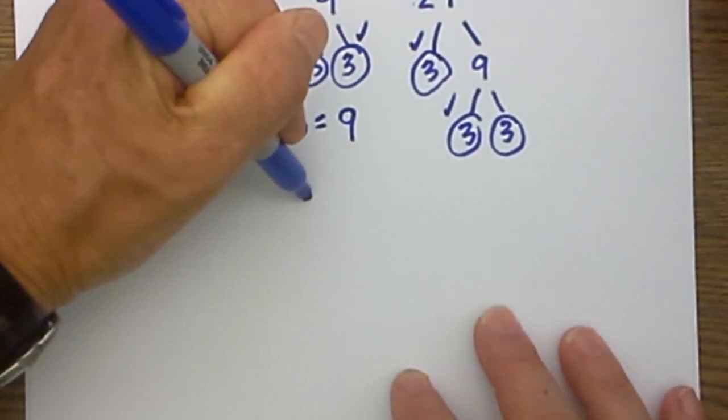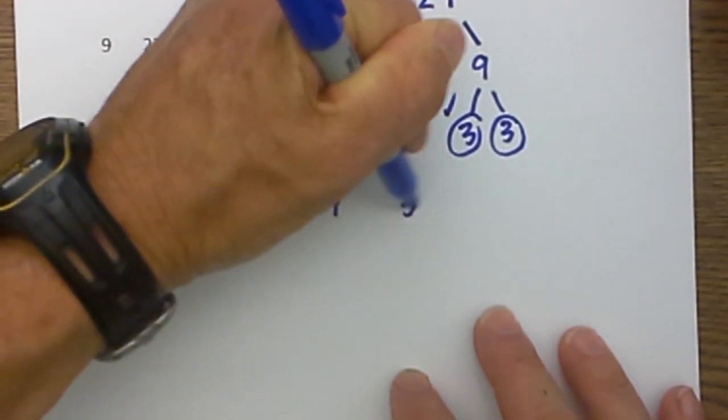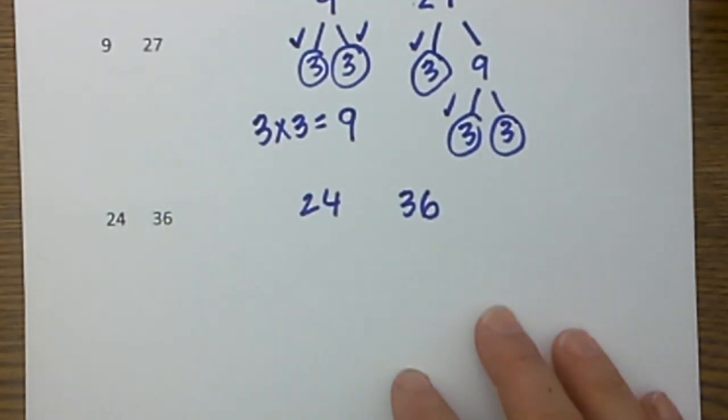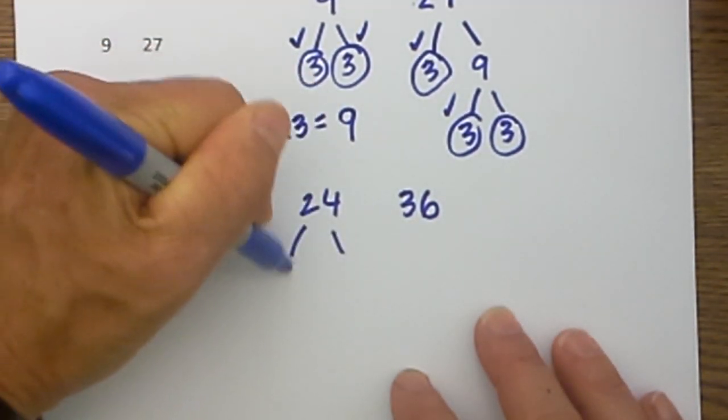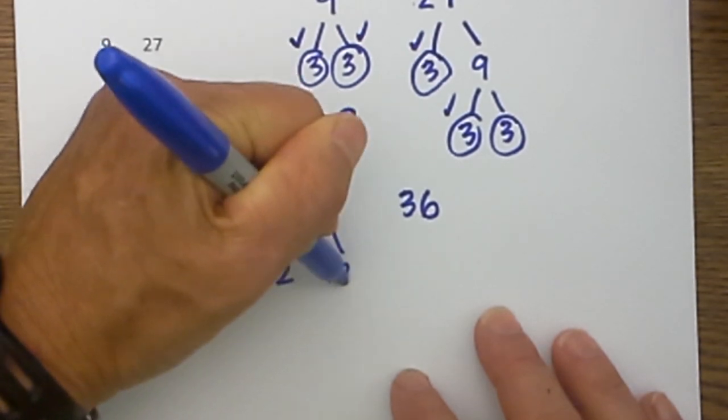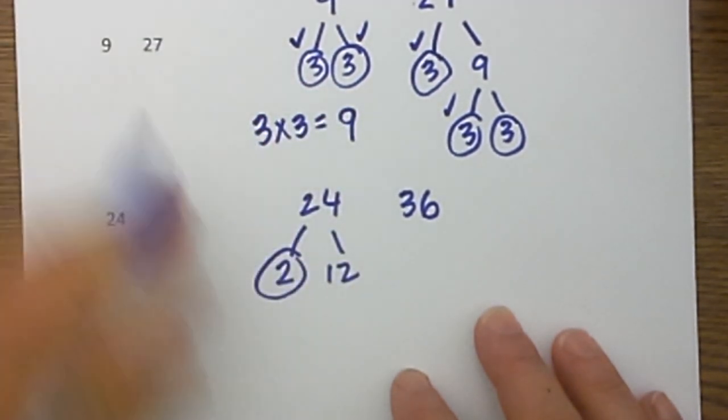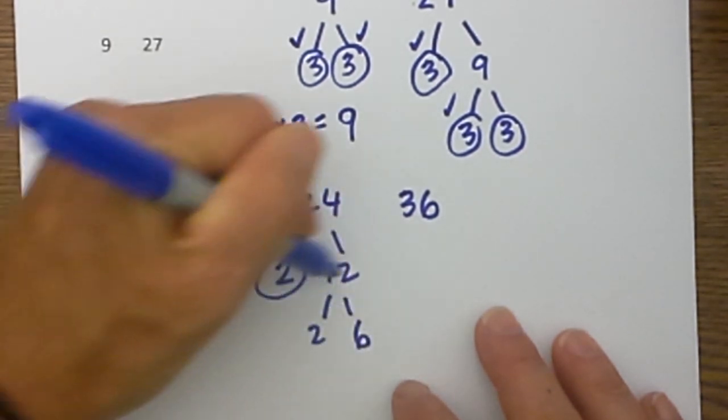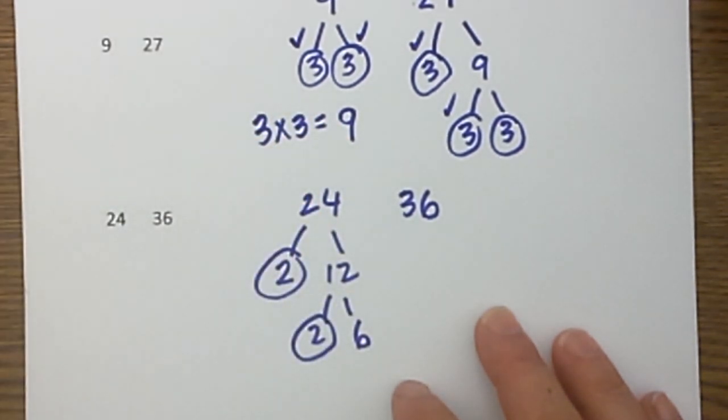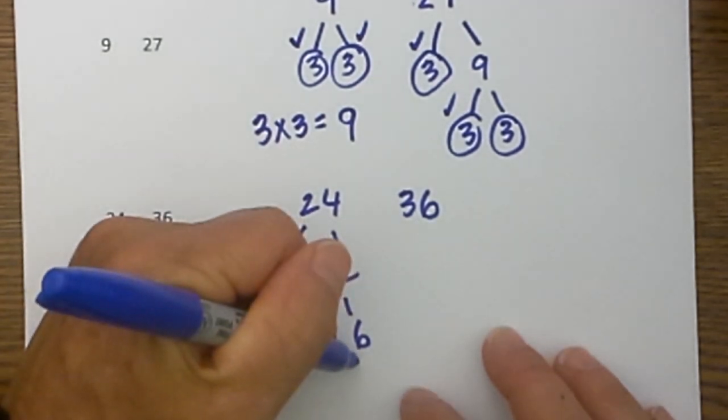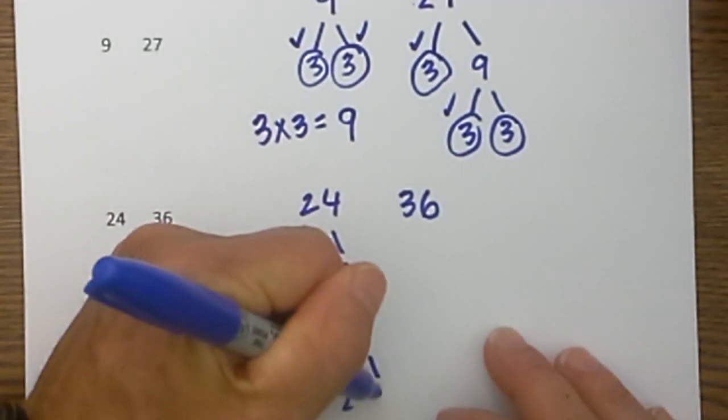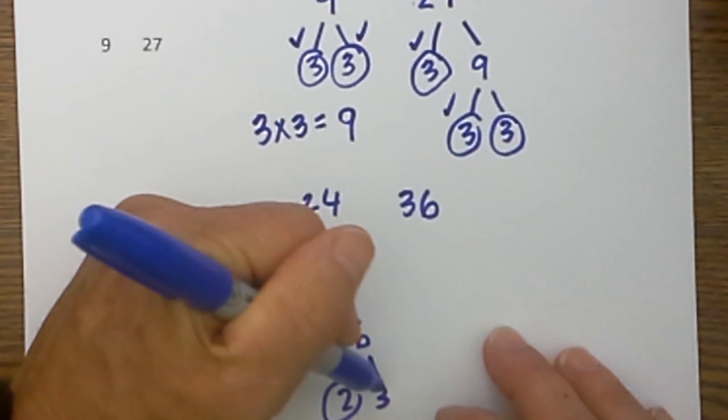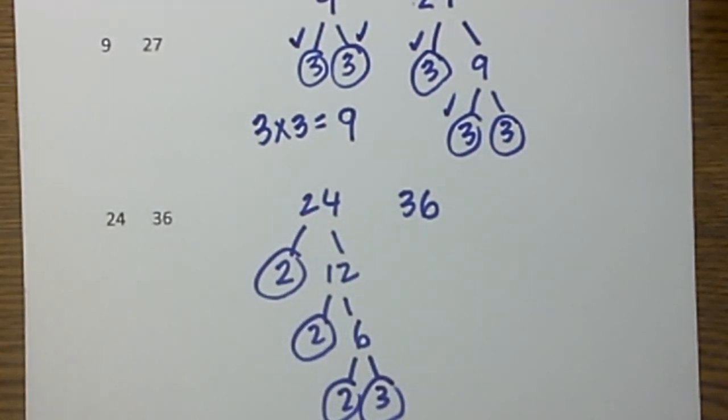I now have 24 and 36, and I will just repeat the same process. 24 is divisible by 2. 2 times 12 is 24, so I will circle the 2 because it is a prime number. Then 2 times 6 is equal to 12. I will circle the prime number. Then for 6, 2 times 3 is equal to 6, and they are both prime numbers, so I will circle both of them.